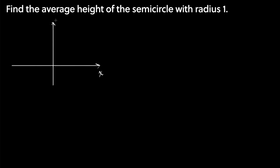So we have x, y, and then we have a semicircle with radius 1. We have negative 1, we have 1 and 1. This is the equation for a circle with radius 1 and we're interested in this semicircle. Y is only positive here, and we want to find the average height of this semicircle with radius 1.